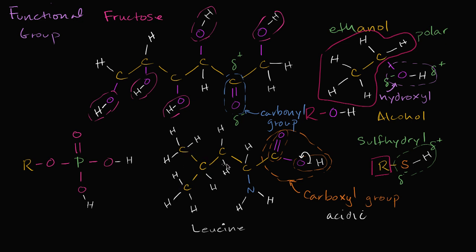This amino acid also has an amino group — that's where the name 'amino acid' comes from. The 'acid' part comes from the carboxyl group, and the 'amino' part is this group involving nitrogen. The amino group is generally basic, because nitrogen has a lone pair of electrons and can use that lone pair to form a bond with a hydrogen ion, picking it up. Since it can absorb hydrogen ions, the amino group is viewed as basic.